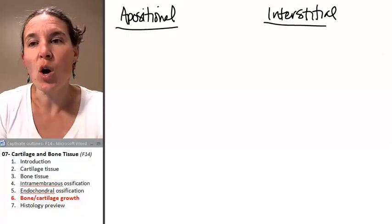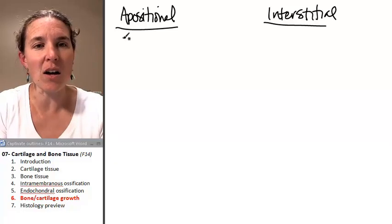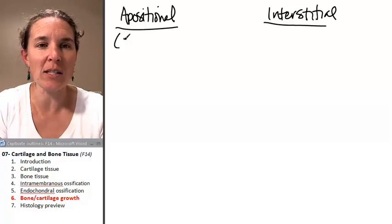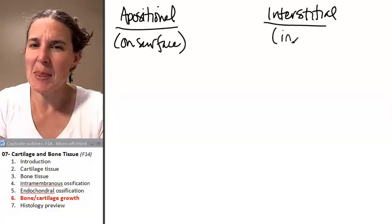So first of all, we can have a process called appositional growth, and this takes place on the surface. So let's make a little note: this is like on the surface. And interstitial growth is like in the middle.